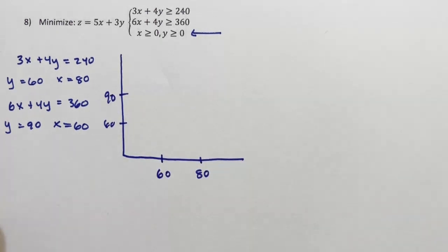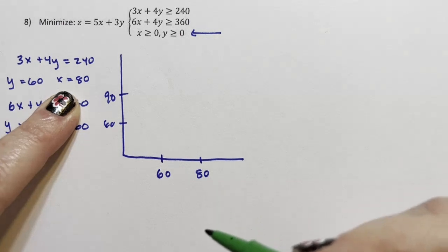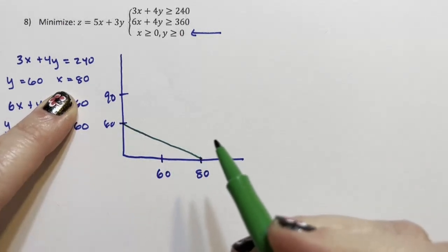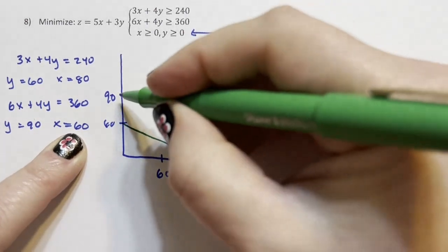And then in the first line, the 60 and the 80 are connected to each other. That's one line. And in the next one, the 60 and the 90 are connected to each other.